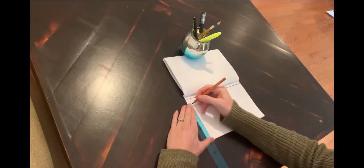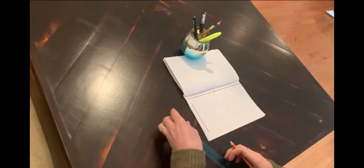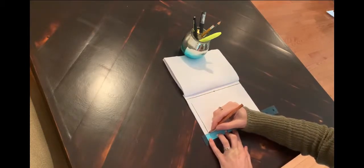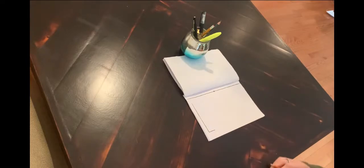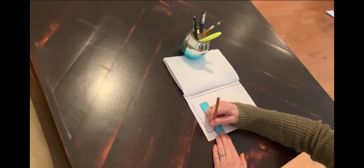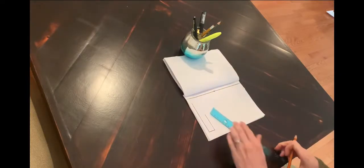For my block letter I'm going to do an M because my first name is Molly. When you make block letters, err on the side of using a ruler if you can, just because they're going to turn out better.